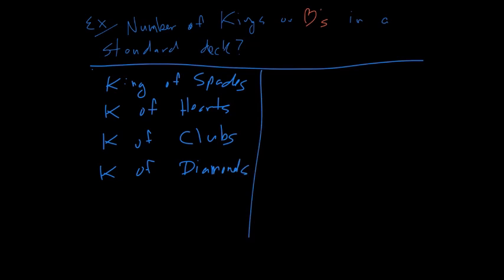So, if I want to count the number of kings or hearts in a deck, then I would count the number of kings plus the number of hearts and then subtract off the number of cards that are kings and hearts at the same time.